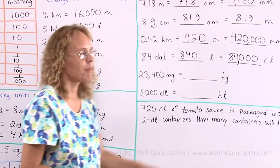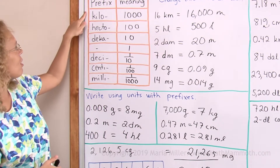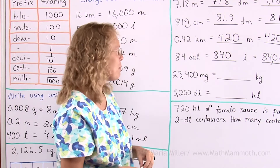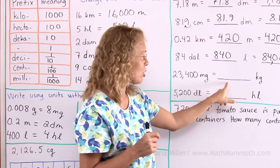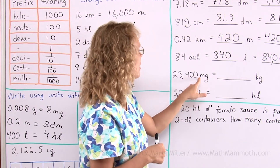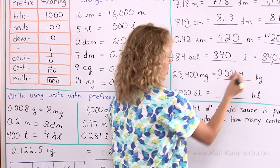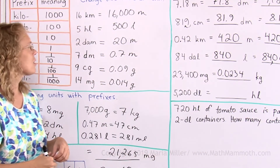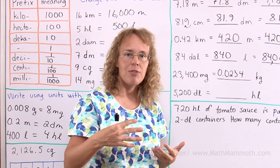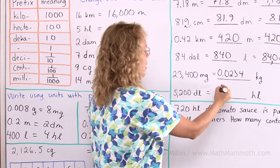From milligrams to kilograms — we don't usually do such a conversion, but let's see how. From milli to kilo is six steps. I need to move the decimal point six steps; since kilograms are bigger units I need fewer of them, so divide by 10 to the sixth power — giving 0.0234 kilograms. From deciliters to hectoliters: deci to hecto is three steps. Hectoliters are bigger units, so divide by 1000 — the decimal point moves three steps, giving 5.2 hectoliters.